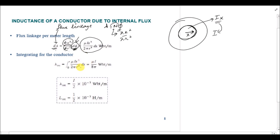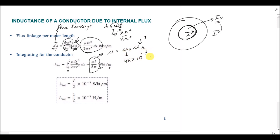To find the flux linkage for the whole conductor, we integrate from 0 to r, where r is the total radius of the conductor. Integrating with variable x, we get the total internal flux linkage λ = μi/8π weber-turns per meter. Since mu = mu_0 = 4π×10⁻⁷ henry per meter, substituting gives λ = i/2 × 10⁻⁷ weber-turns per meter. The inductance value L equals λ/i, so the inductance due to internal flux is L = 0.5×10⁻⁷ henry per meter. Thank you.